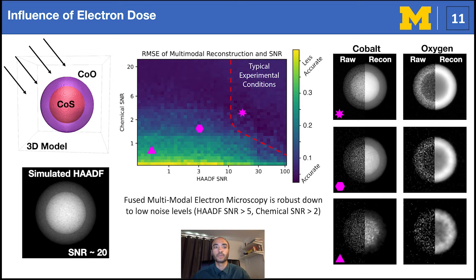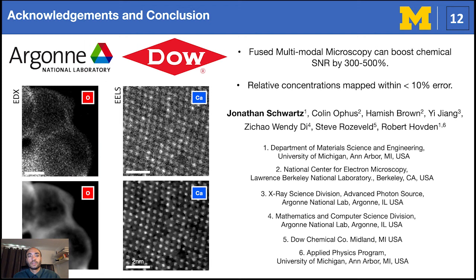In conclusion, I've shown today that fused multimodal electron microscopy can substantially improve chemical maps by providing up to 500% signal-to-noise improvements. This is accomplished by enabling communication between the simultaneously acquired modalities collected inside the microscope. As a result, researchers can measure local concentrations with less than 10% error. The framework for fused multimodal electron microscopy is flexible and can be easily modified to incorporate additional modalities.